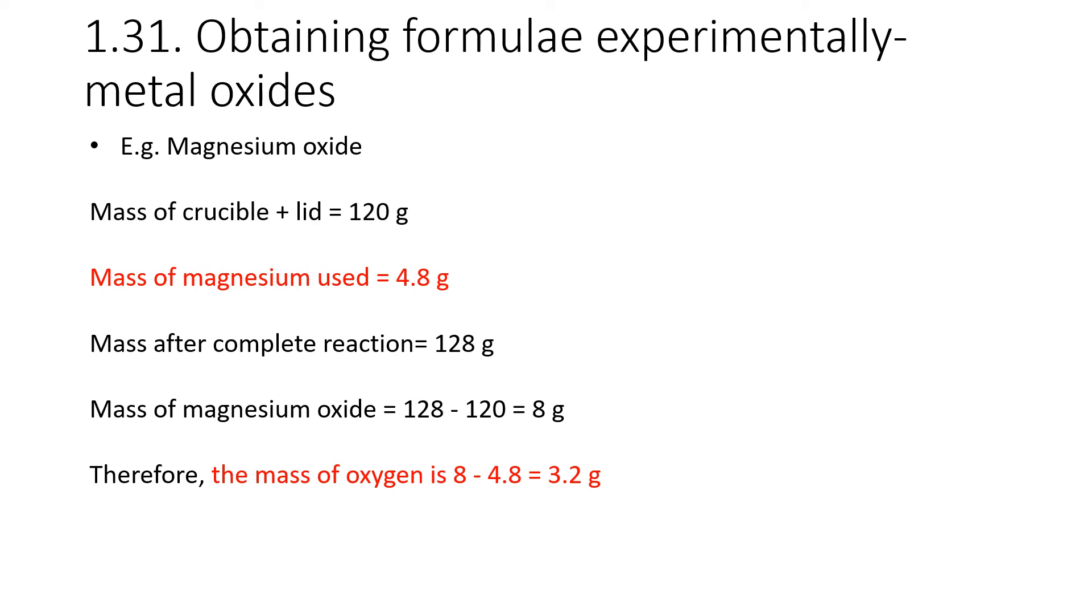Imagine we started off with a crucible and lid that weighed 120 grams together. Then we add 4.8 grams of magnesium and we do our reaction. And the mass afterwards, when it stopped changing, is 128 grams. To figure out the mass of the magnesium oxide that's now formed, we take away 120 from 128, which gives us 8 grams of magnesium oxide. We know that there are 4.8 grams of magnesium in that magnesium oxide. Therefore the difference between them will tell us how much oxygen there was.